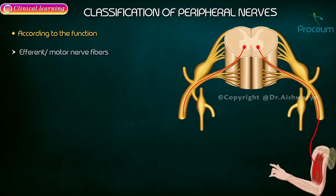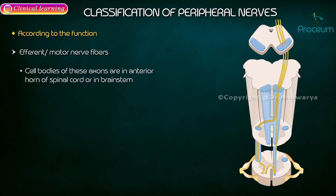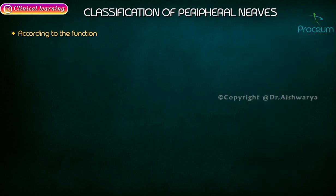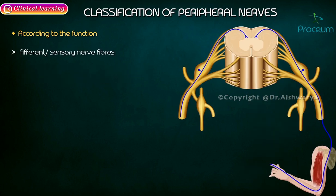The efferent motor nerve fibers carry impulses from the spinal cord or brain to the peripheral structures like skeletal muscles or glands. The cell bodies of these axons are located either in the anterior horn of the spinal cord or in the brainstem nuclei.